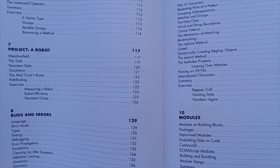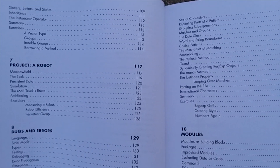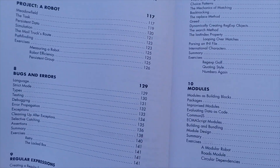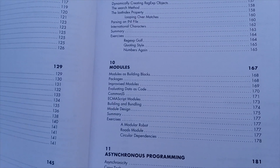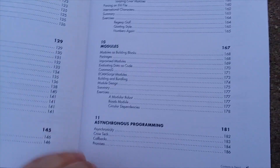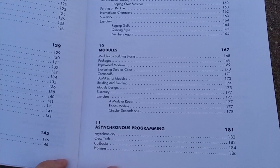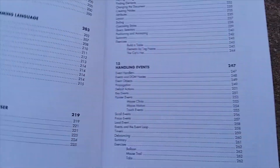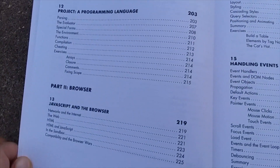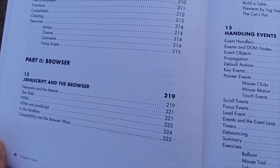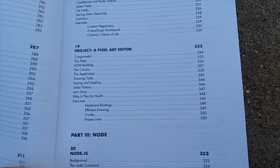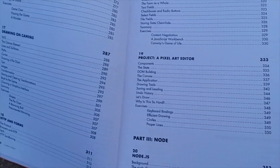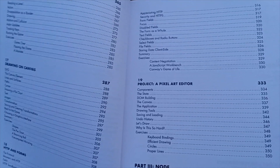There's even a project in here called a robot. There's also exercises after each chapter, which is another rarity. You really don't see that in most JavaScript books or many programming books. Modules, asynchronous programming. There's another project, and then in part two we go to the browser — that's JavaScript in the browser, chapter 14 the DOM, chapter 15 handling events. It just goes on and on, and it's so thorough, and putting these projects in here was a really big bonus.